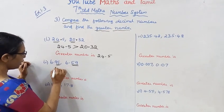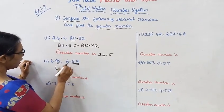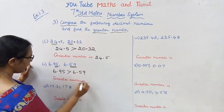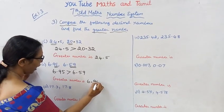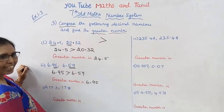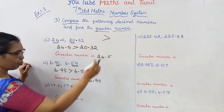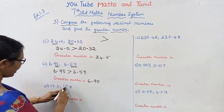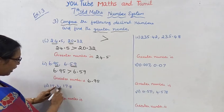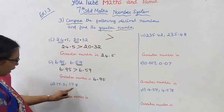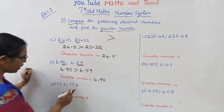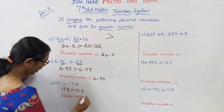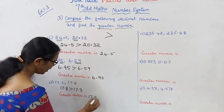6.95 is greater than 6.59. Greater number is 6.95. Next problem: 17.3 and 17.8. Point digits are 3 and 8 — 17.8 is greater than 17.3. Greater number is 17.8.